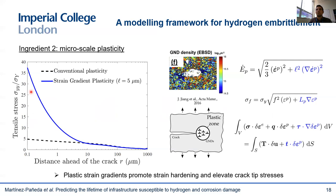You can see here the tensile stress ahead of the crack tip as a function of distance to the crack tip, for both a conventional plasticity model and a strain gradient plasticity model. Far away from the crack tip, both predictions agree, but as we approach a distance of a few microns ahead of the crack — basically the critical distance of hydrogen-assisted cracking — GNDs and plastic strain gradients start playing a role and significant differences are observed. It is very important to get your stresses right at the critical distance, not only because cleavage fracture will take place when a critical stress is reached, but also because the hydrogen concentration depends on the hydrostatic stress.